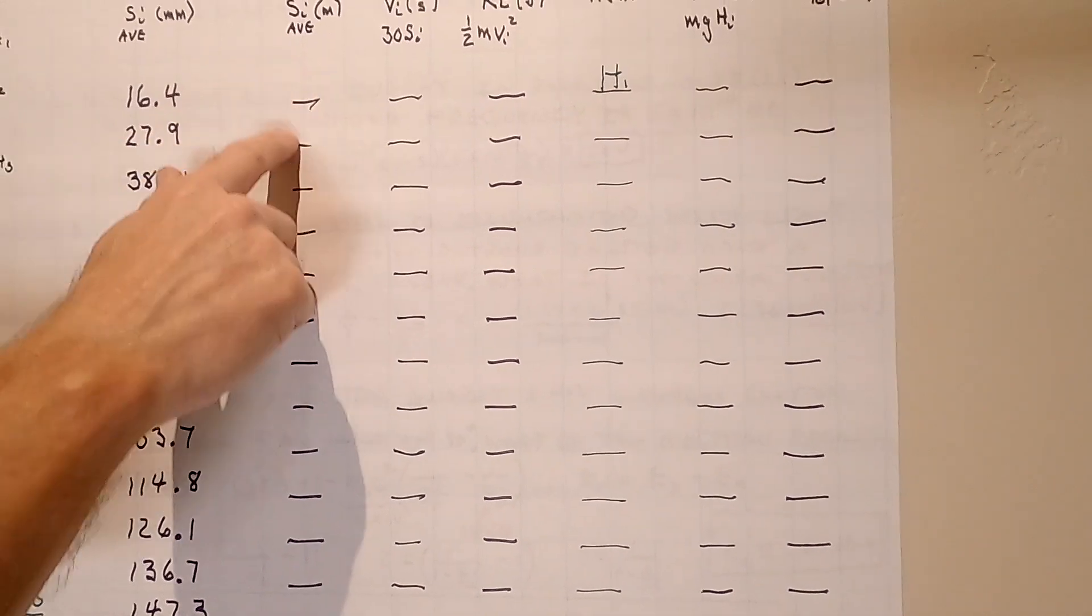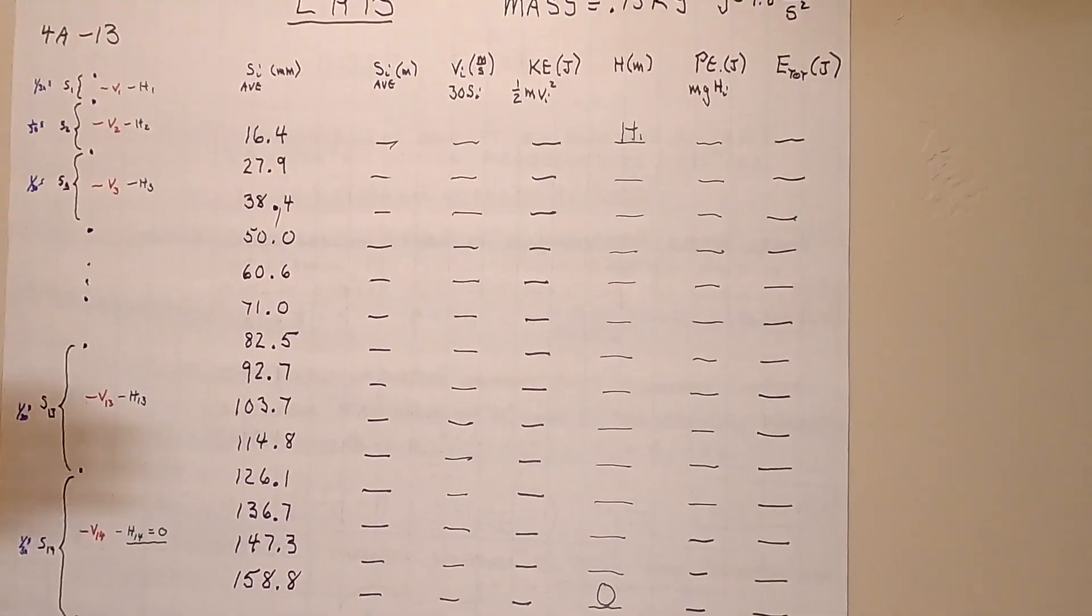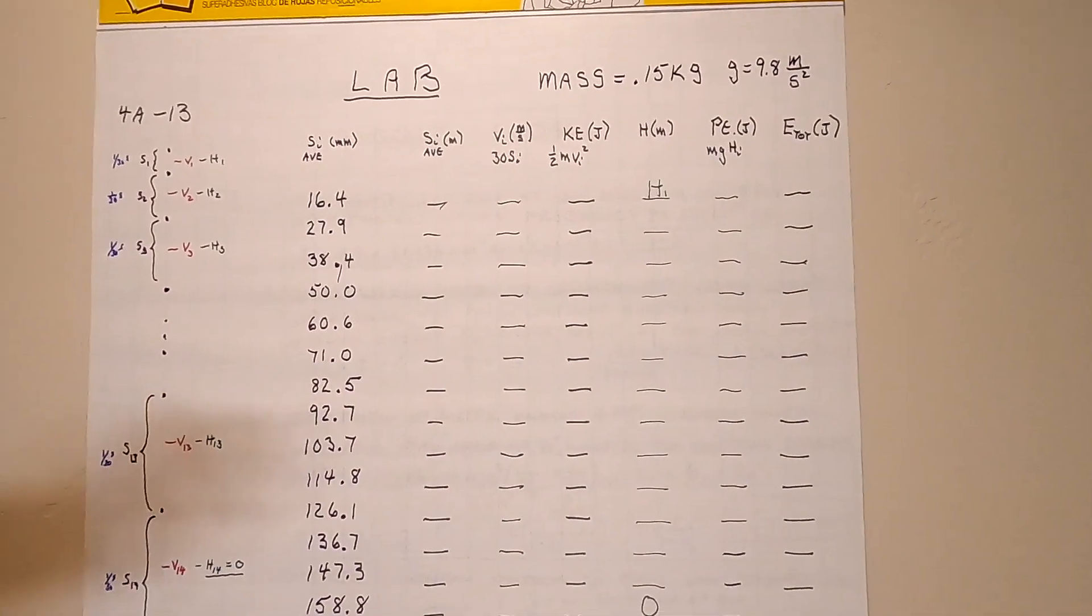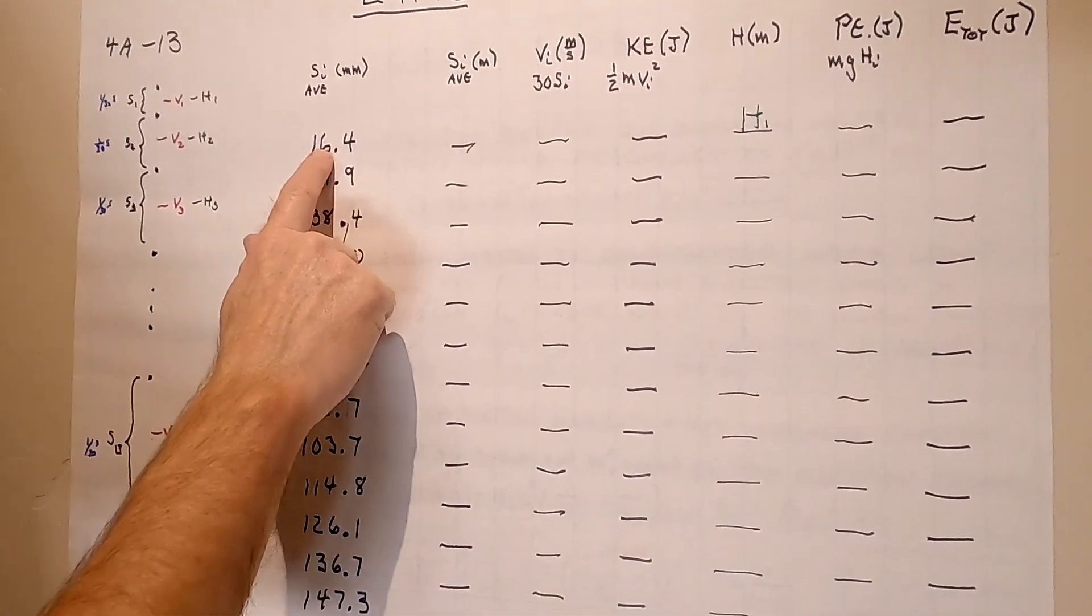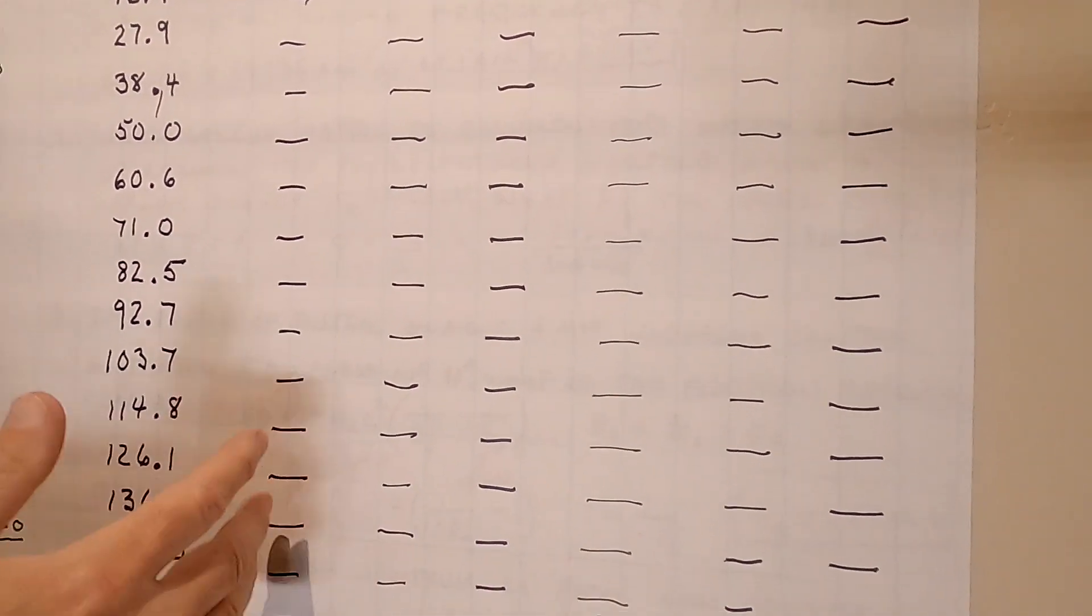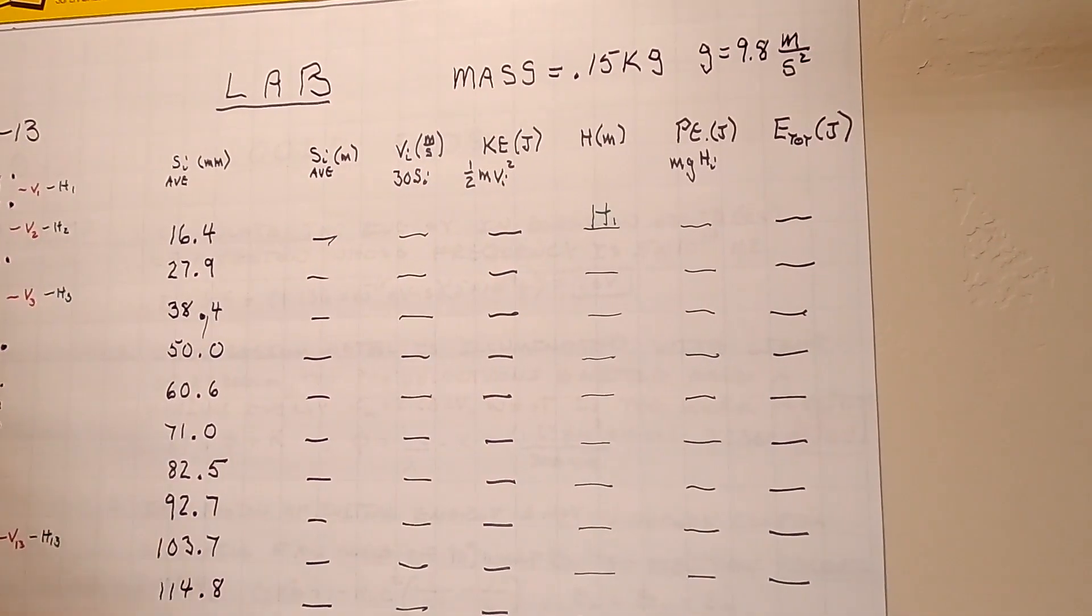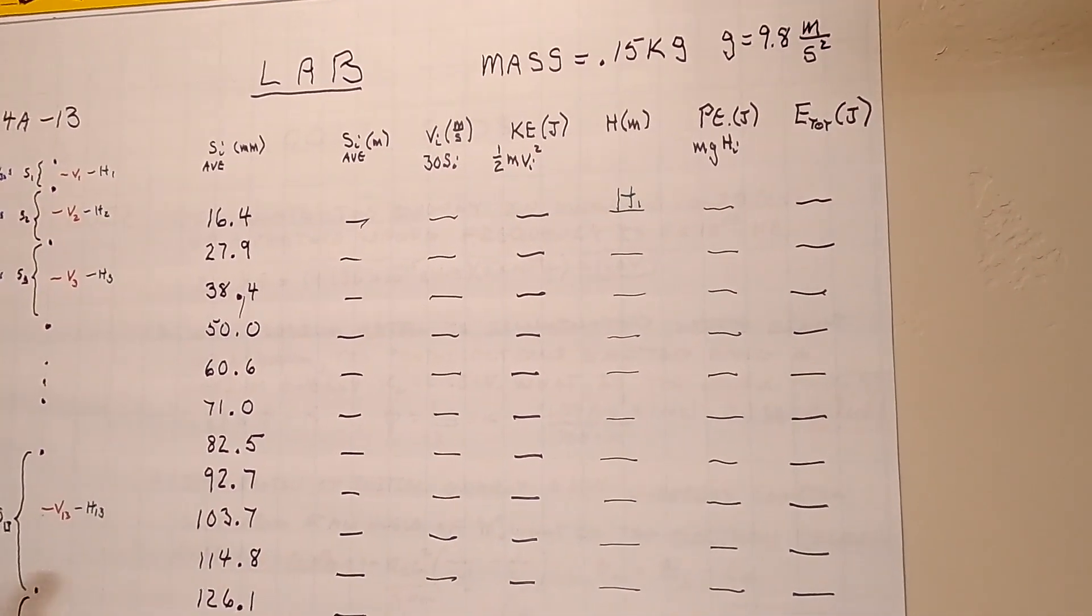Well, we also calculated the speed. Remember we took this number, we multiplied it by 30, and we got a column of the speeds. Now you're going to have to do that again with these numbers right here. Get a column of the speeds.